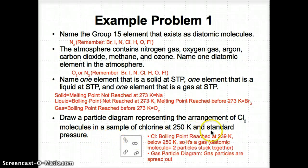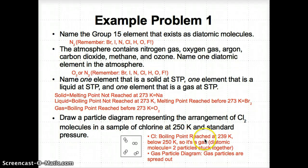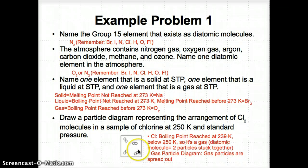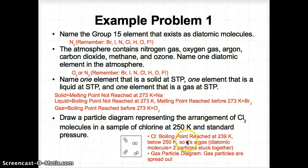For the final question, we compare the boiling point of chlorine to 250 K. The boiling point of Cl is 239 K, which has already been passed at 250 K. Therefore Cl₂ is a gas. It's also a diatomic molecule, meaning two chlorine particles are stuck together. In a gas particle diagram, the particles are spread far apart, as we learned in unit one. So we draw two of the same chlorine atom spread out, because it's a diatomic gas.